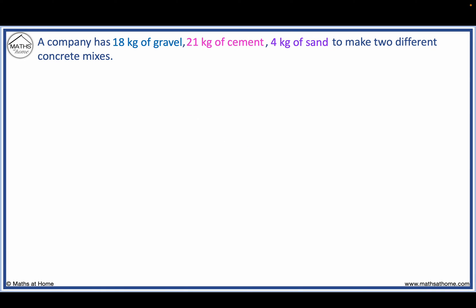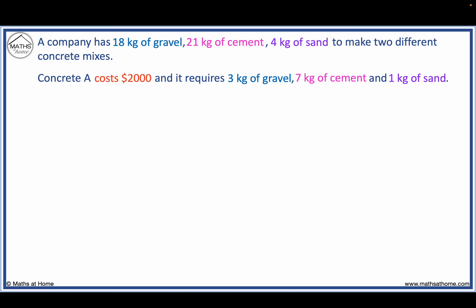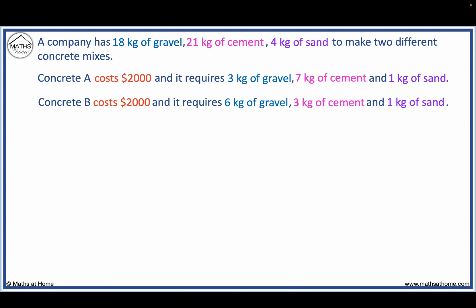A company has 18 kilograms of gravel, 21 kilograms of cement, and 4 kilograms of sand to make two different concrete mixes. Concrete A costs $2,000 and requires 3 kilograms of gravel, 7 kilograms of cement, and 1 kilogram of sand. Concrete B costs $2,000 and requires 6 kilograms of gravel, 3 kilograms of cement, and 1 kilogram of sand.